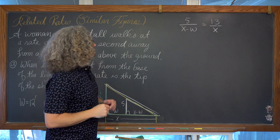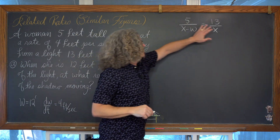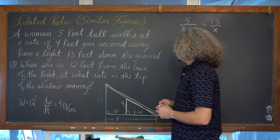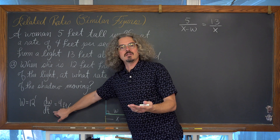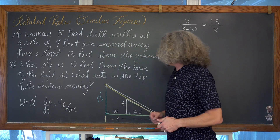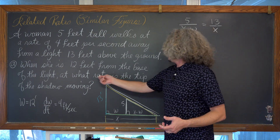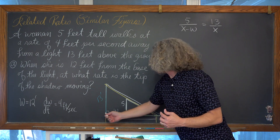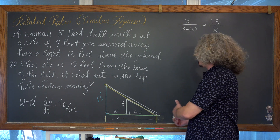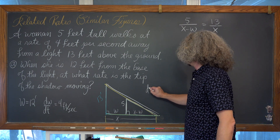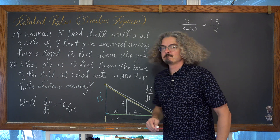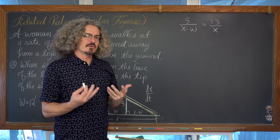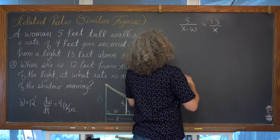We've got two fractions equal to each other, set up with those equal ratios from geometry for similar figures. The question gives us a rate of change for w, the distance between her and the light, and asks for dx/dt — the rate at which the tip of the shadow is moving. I don't want to use the quotient rule, so let's rewrite this in a format that's easier to work with.